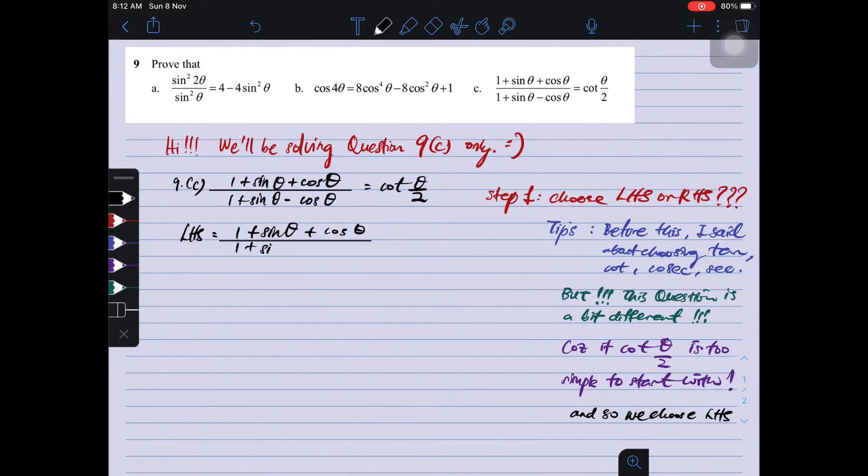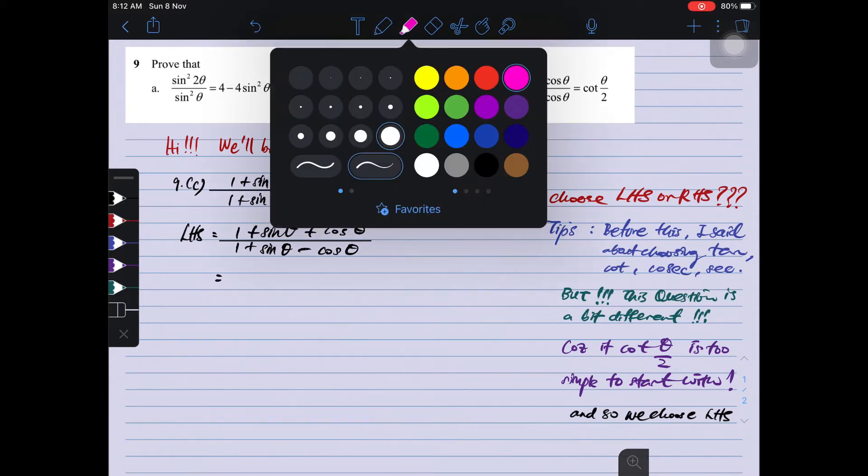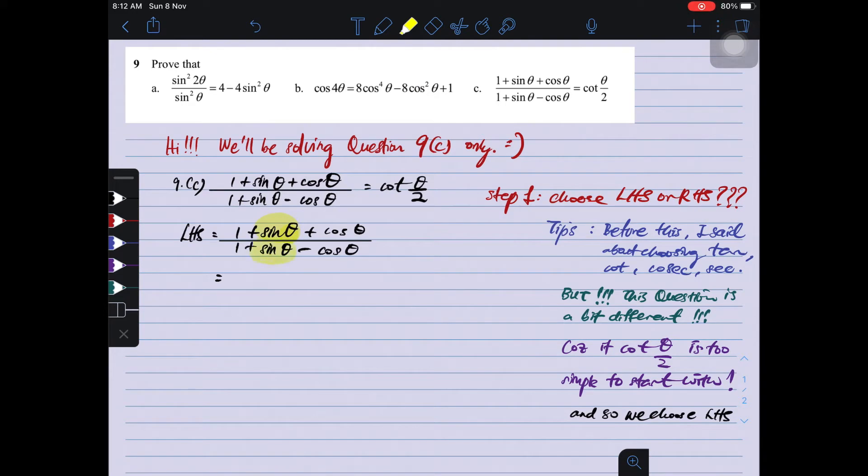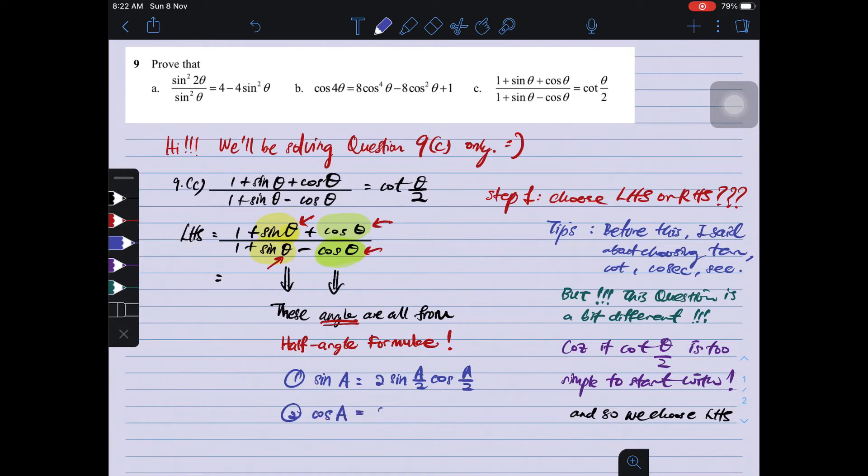We write left hand side first. And then here we go. We need to understand one thing about sin theta and cos theta that I highlighted. We need to know one thing, it's related with half-angle formula. So you must be able to identify what type, must be sensitive to what formula needs to be used. This involves half-angle formula.